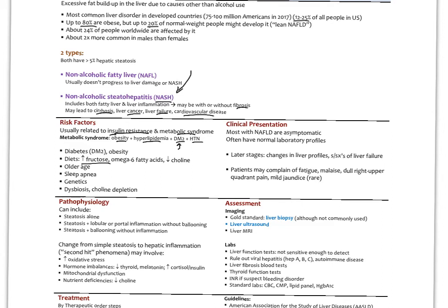Having type 2 diabetes and obesity, diets very high in fructose. We know fructose, the way that liver metabolizes it, especially in high levels, tends to increase the production of liver fat. Having too much of the omega-6 fatty acids with a deficiency of the omega-3s and decreased choline. All of these have been suggested as dietary risk factors. Older age, sleep apnea, genetics, dysbiosis.